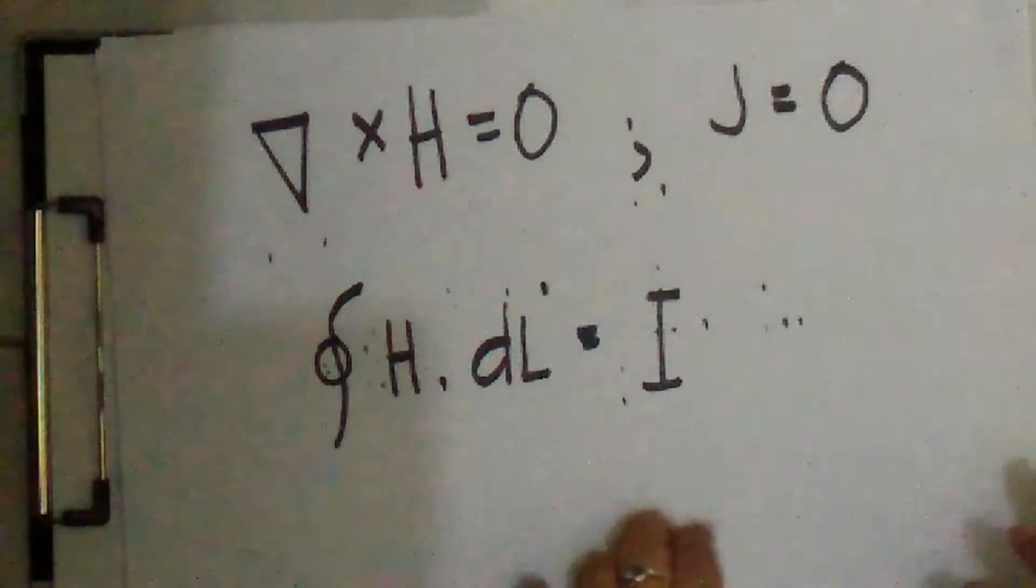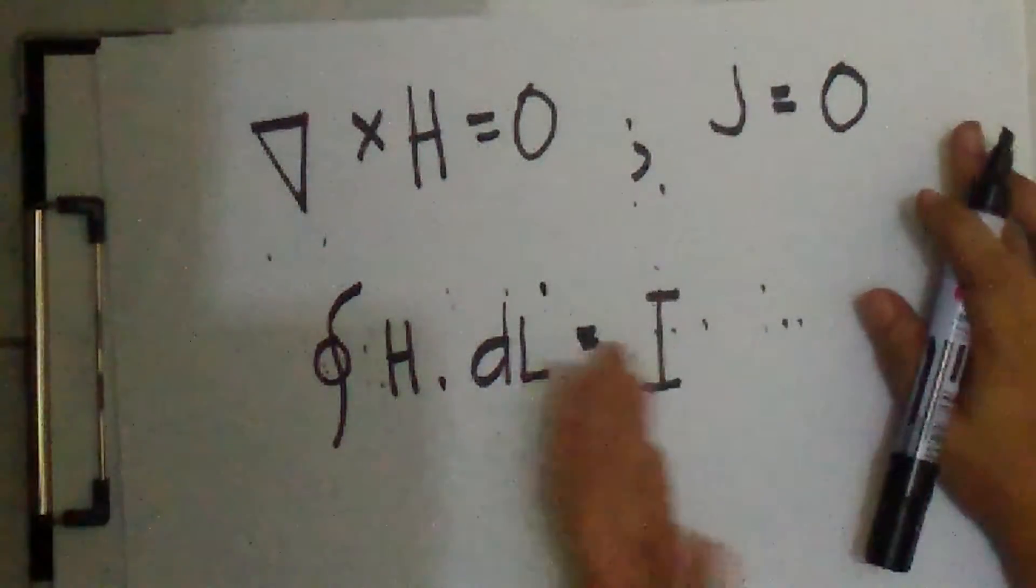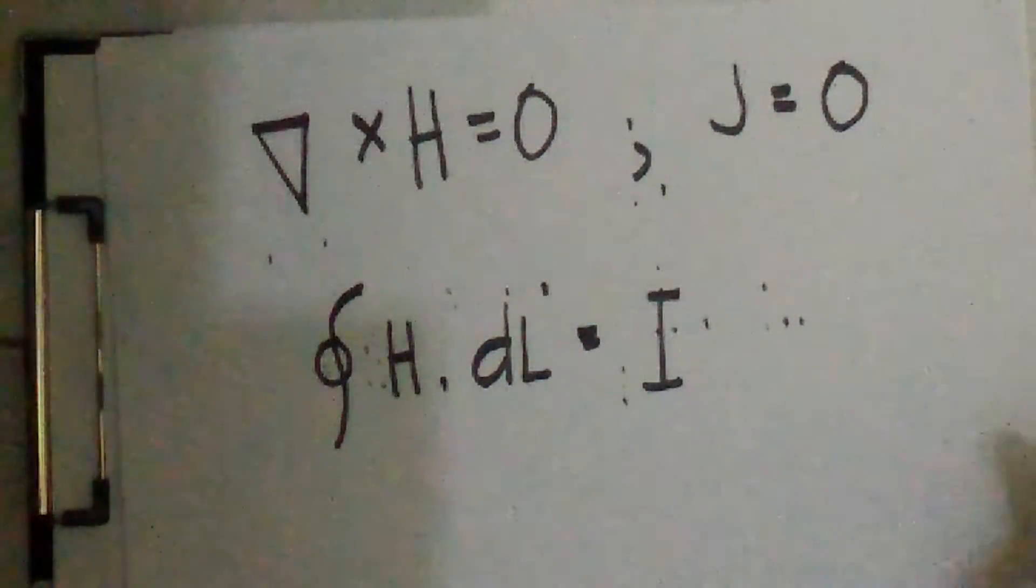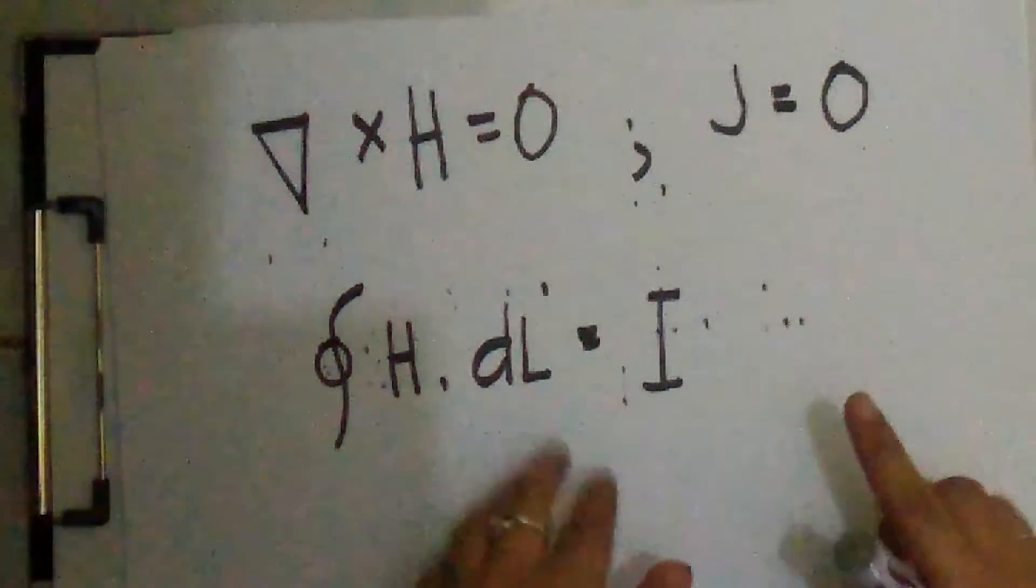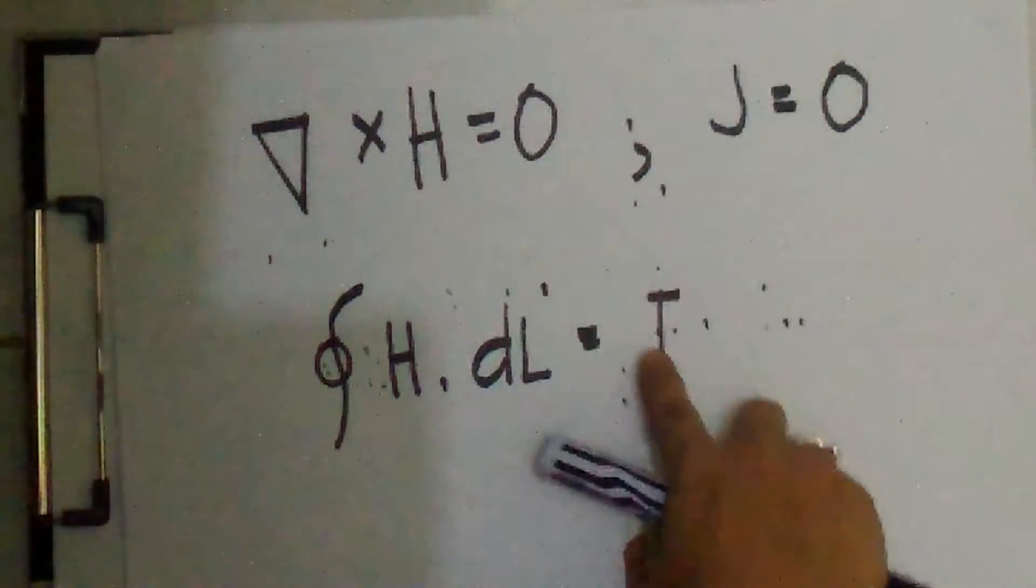Even if J is equal to 0 along the path of integration, every time we make another complete lap around the current, the result of the integration increases by I.